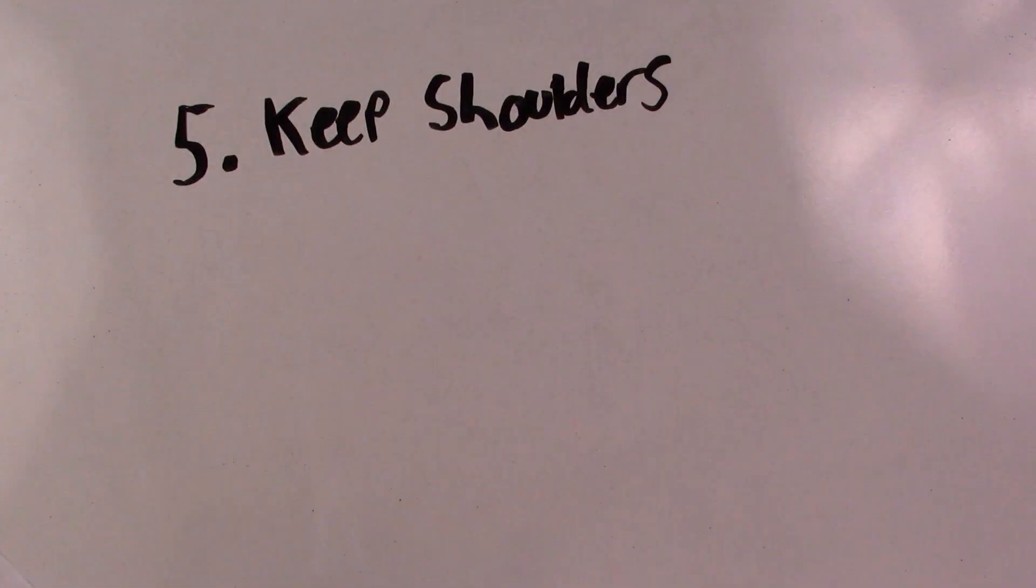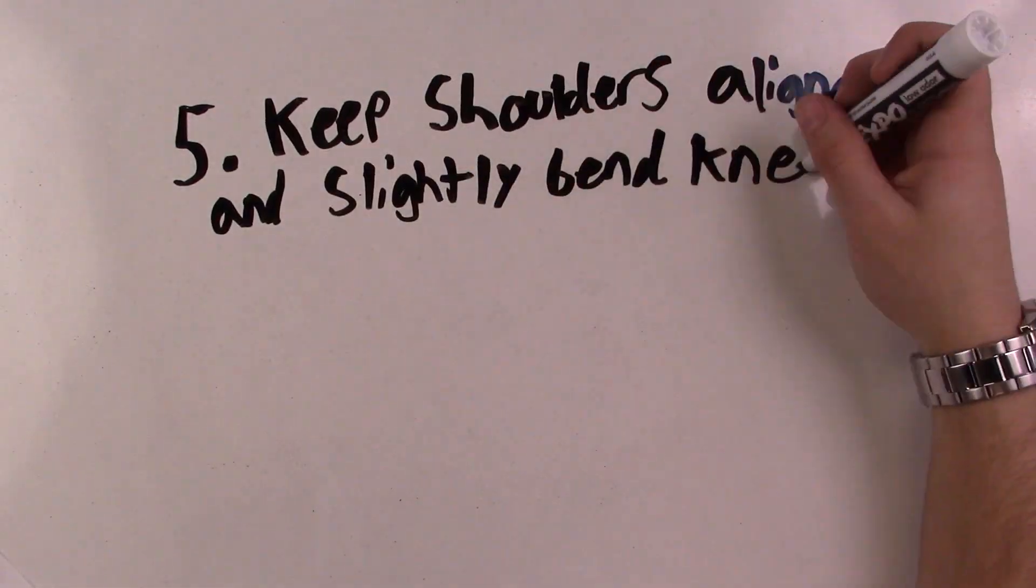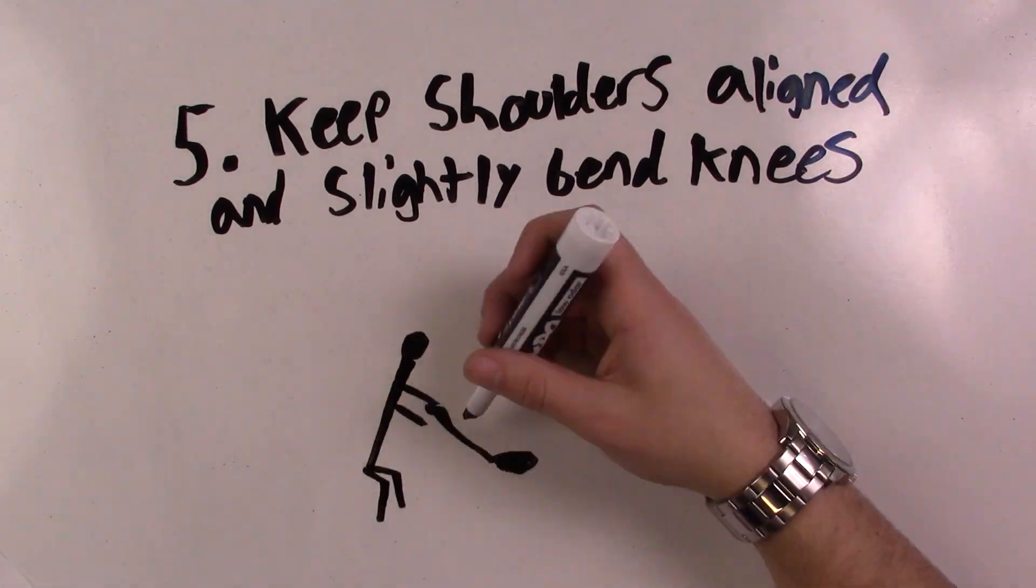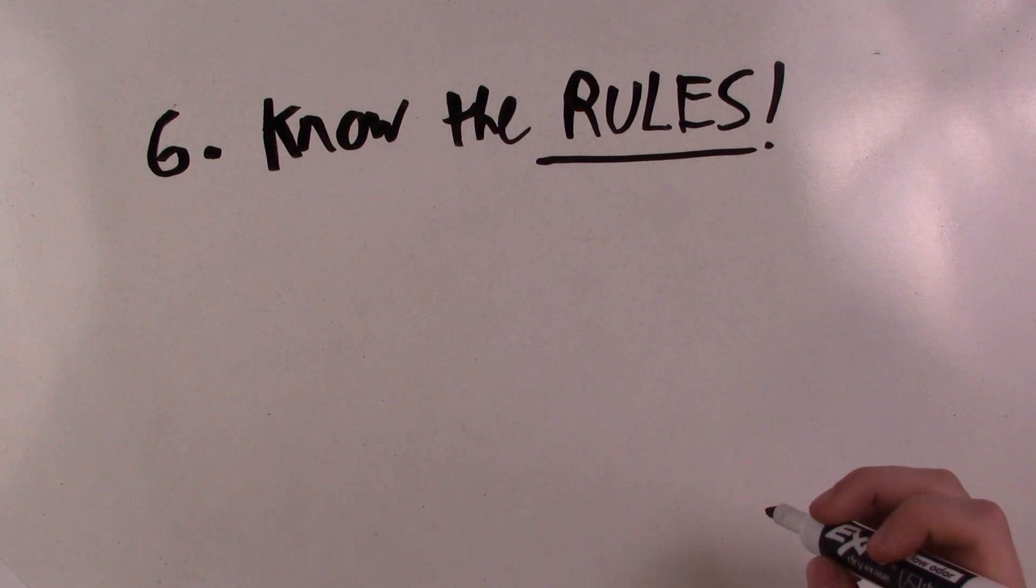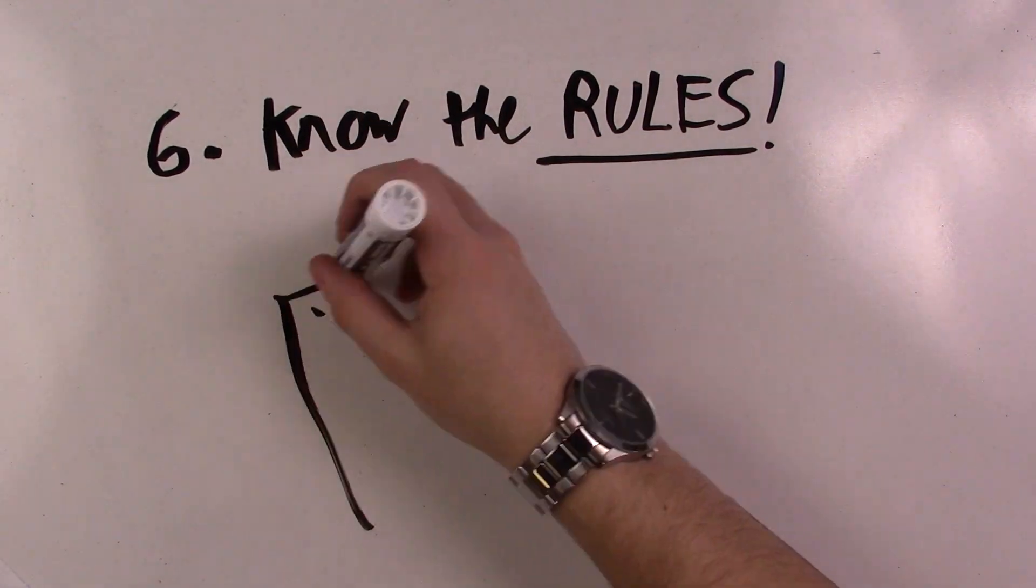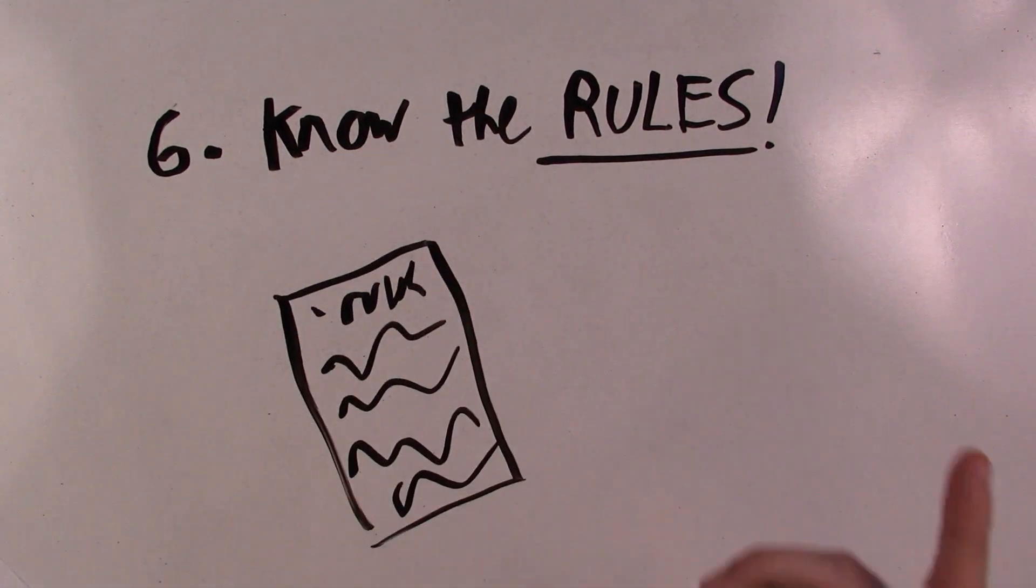Number five: Make sure to keep your shoulders aligned and slightly bend your knees. Number six: Make sure you know the rules and how to behave on the golf course. This way when you're golfing you won't get kicked out.